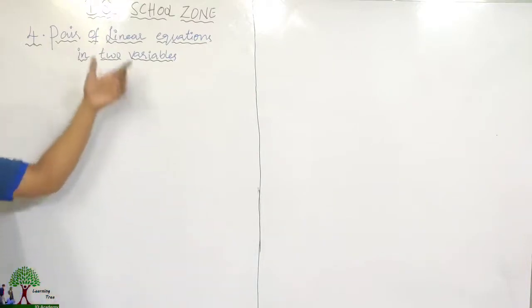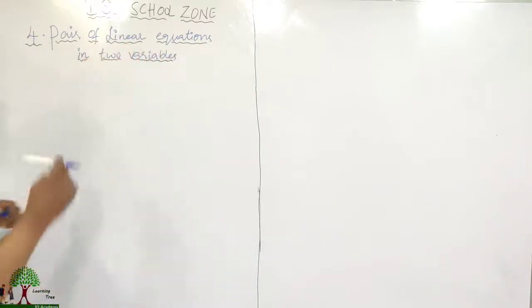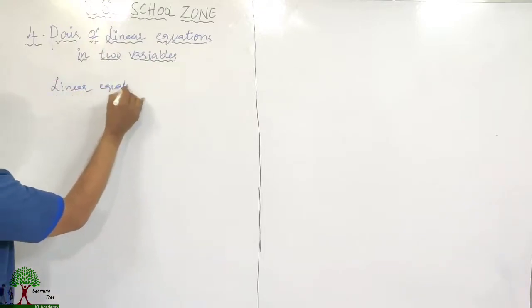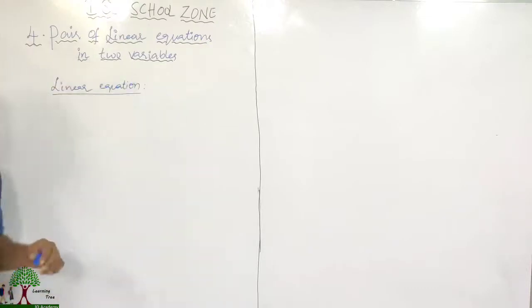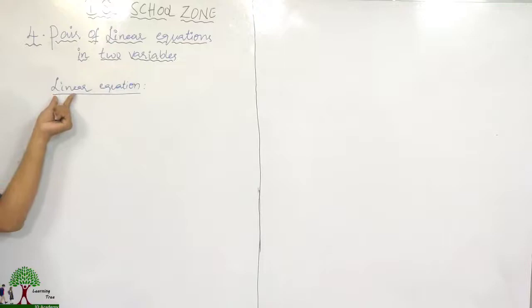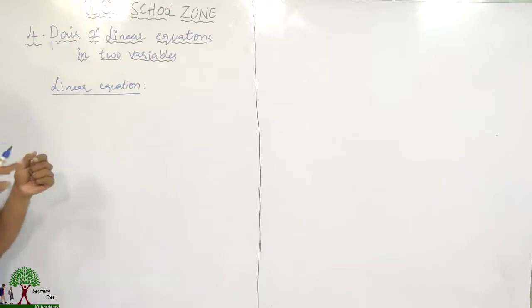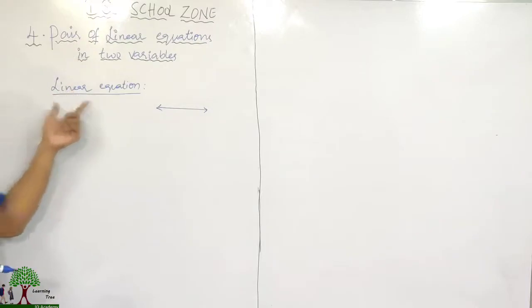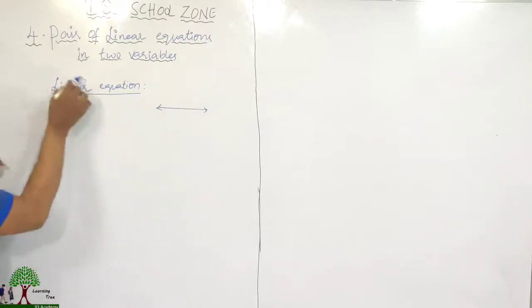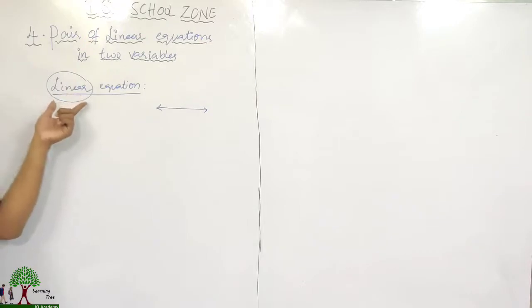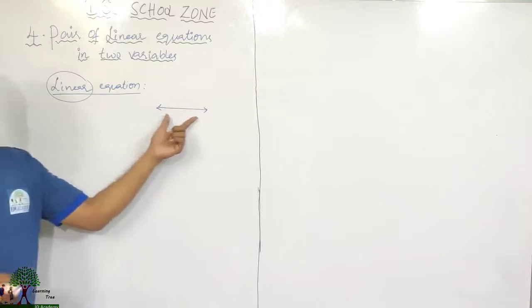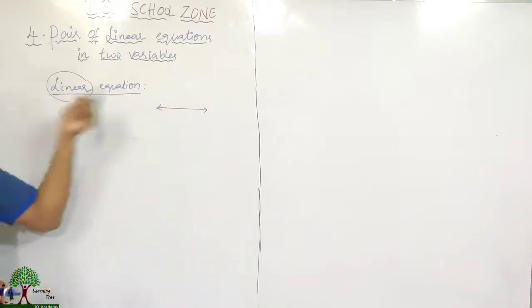Before going to this chapter, we need to know what is a linear equation. The word 'linear' comes from 'line.' When you take that equation and draw a diagram in a graph sheet, you get a straight line. So that equation is called a linear equation.